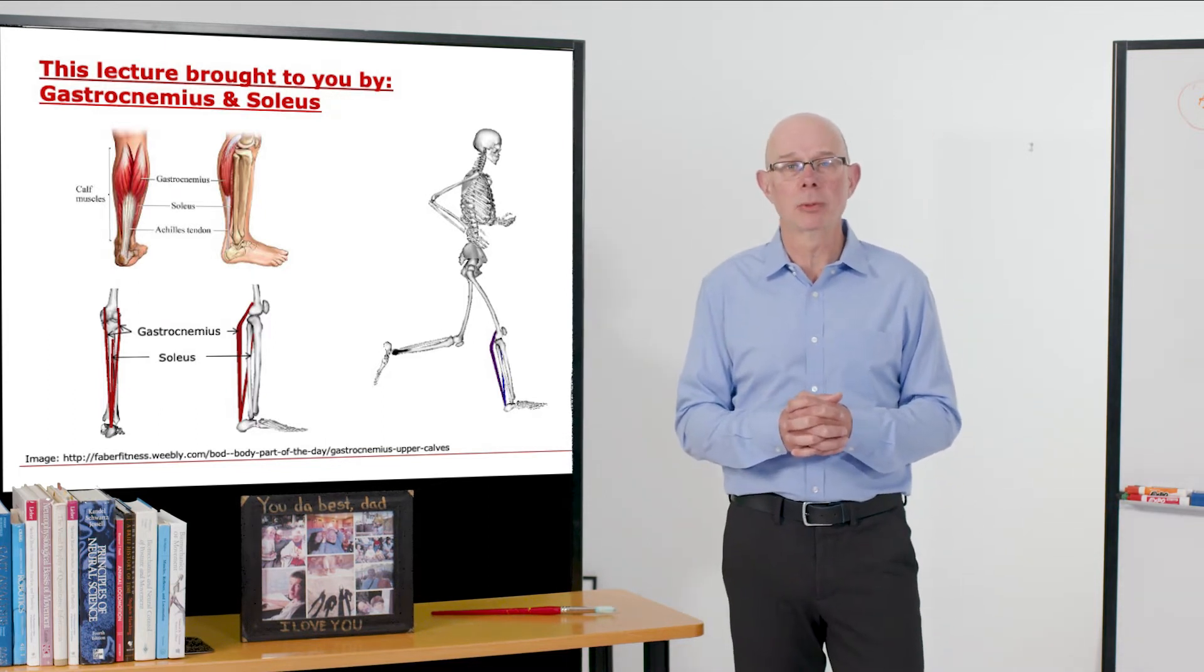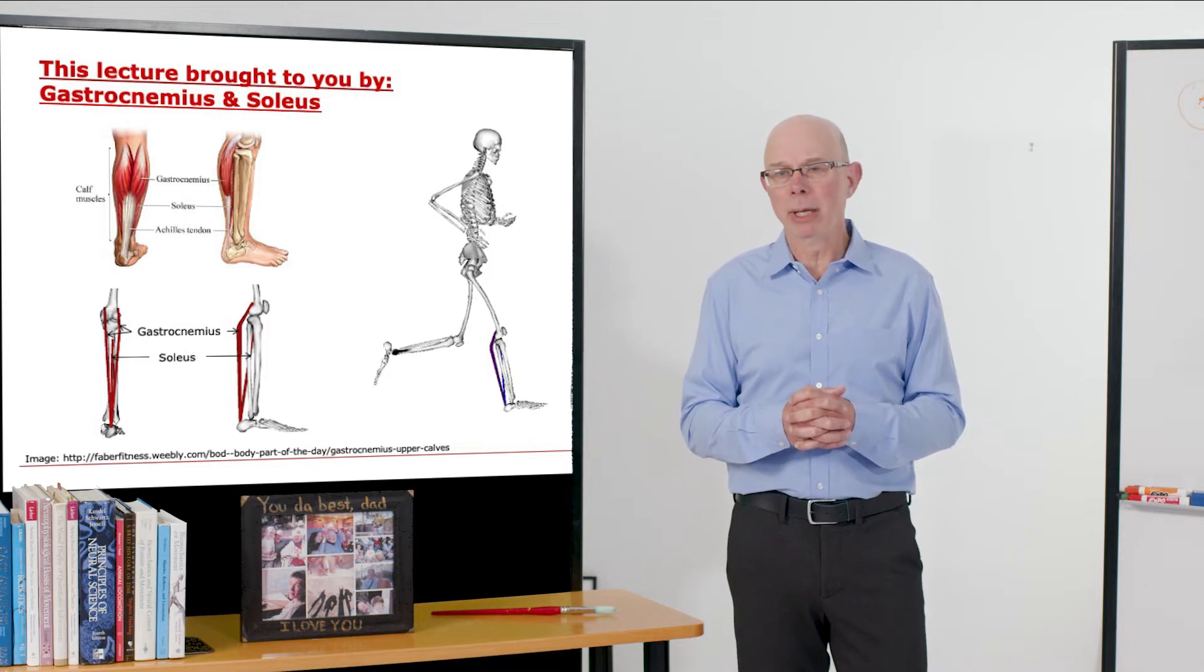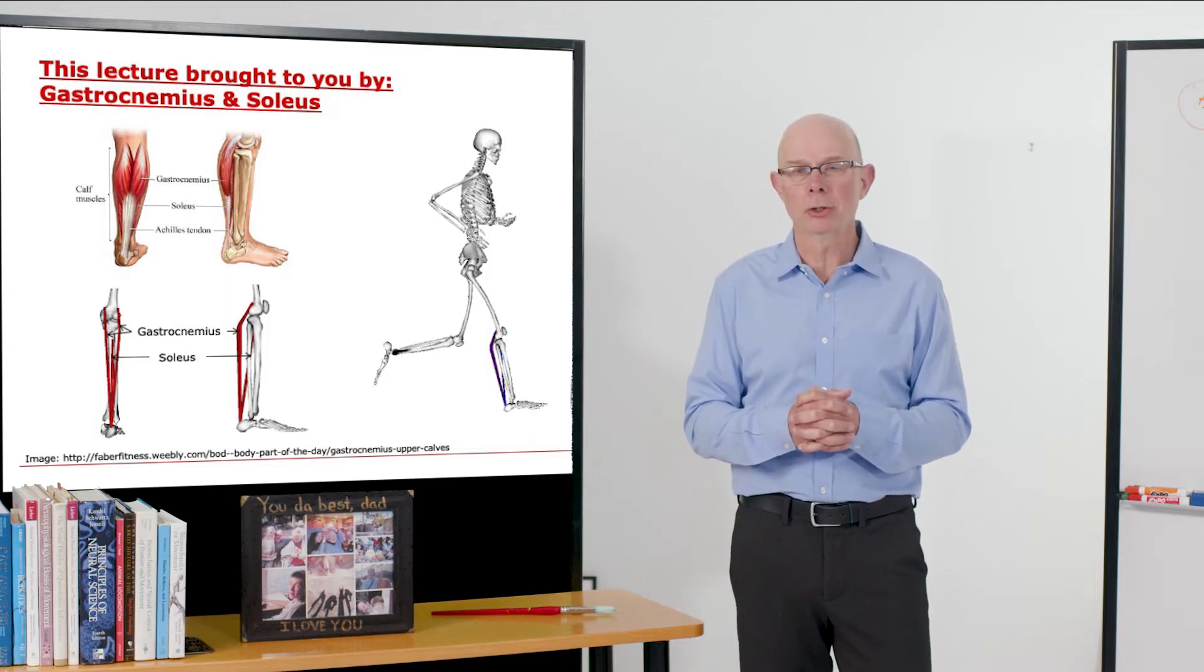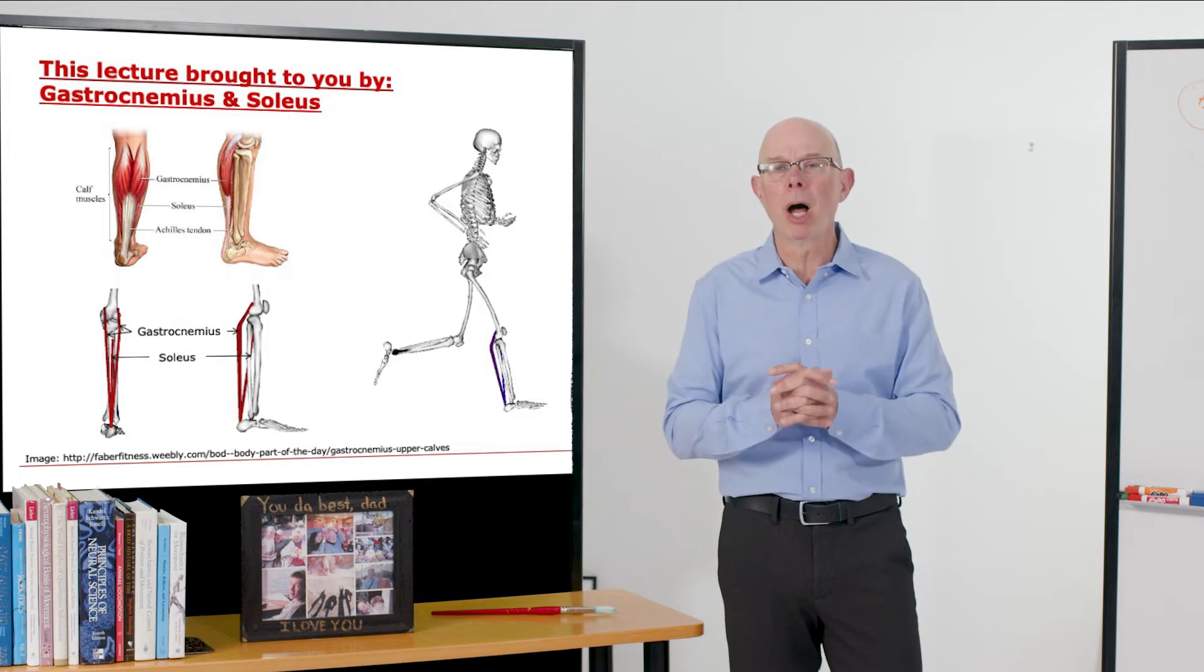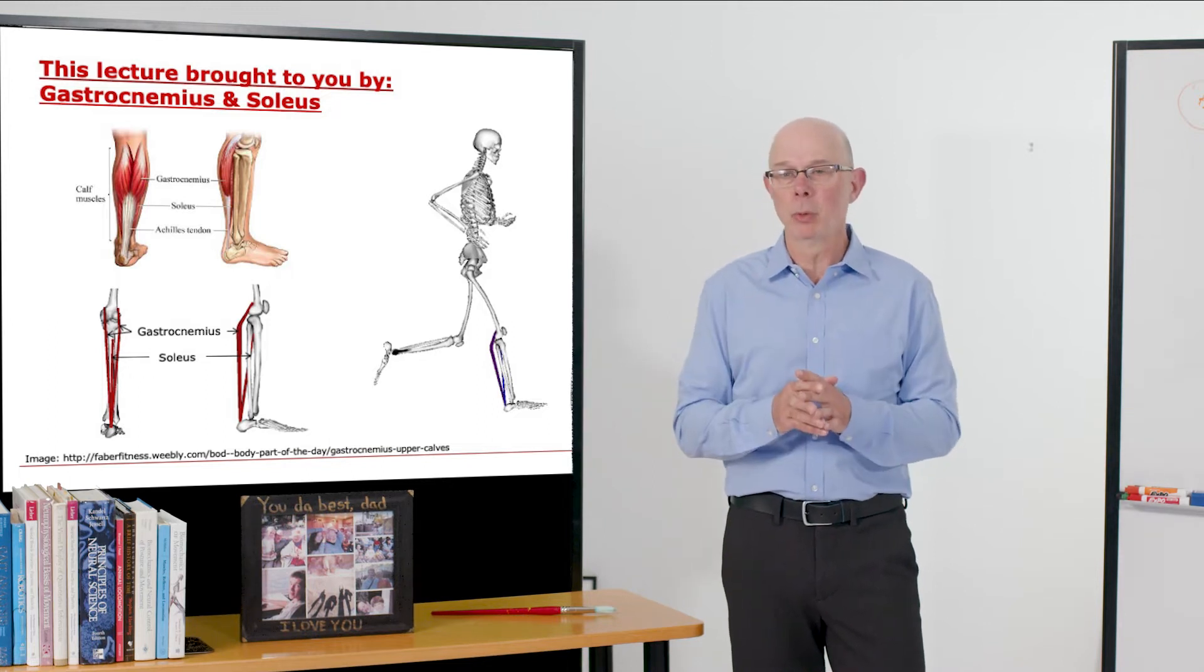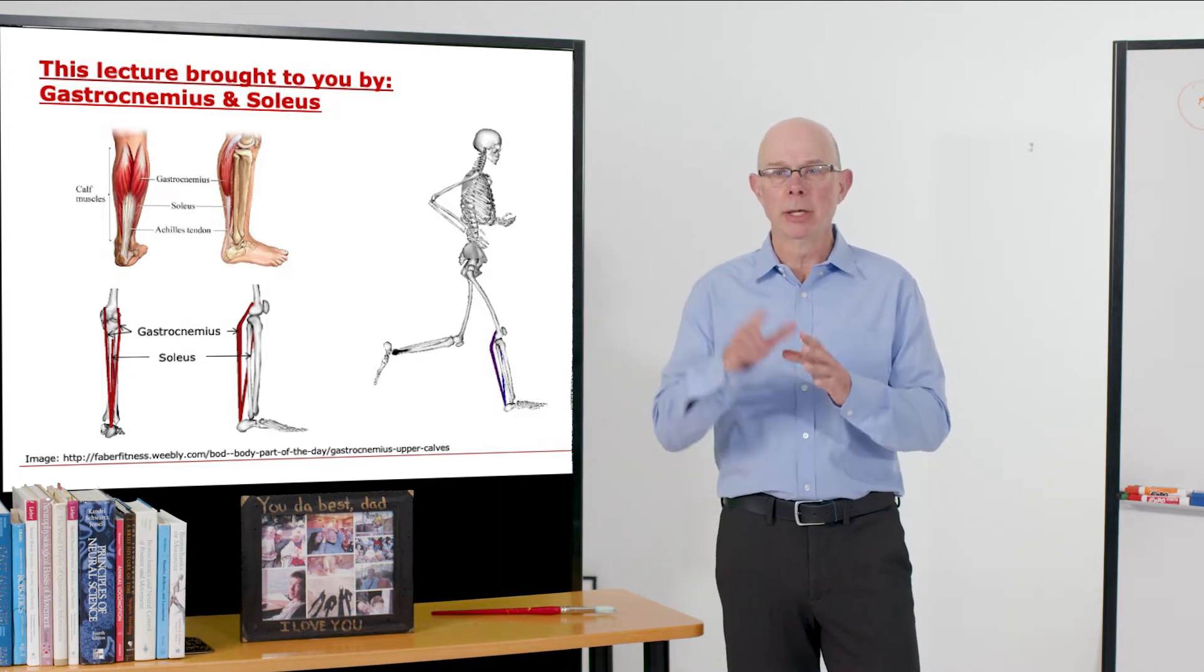Gastrocnemius is the more famous of the two muscles. If you watch somebody walk from behind and look down at their calf, you're really seeing the gastrocnemius—the medial head and the lateral head.